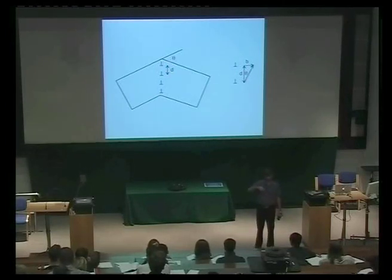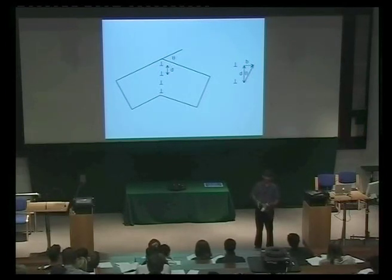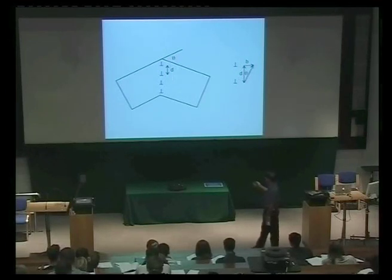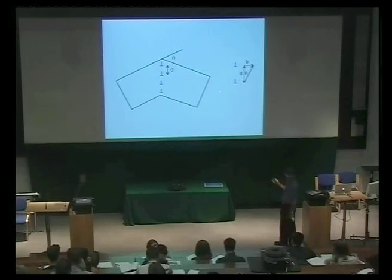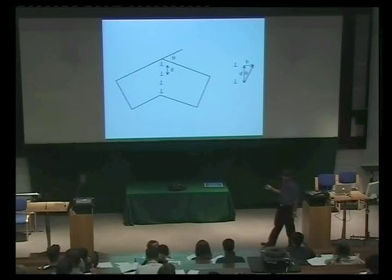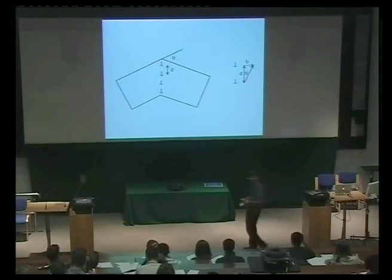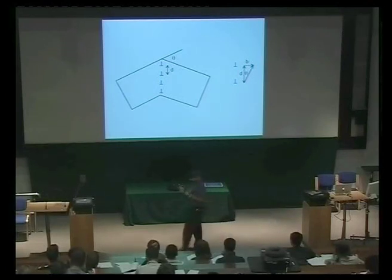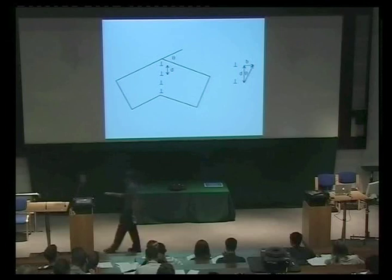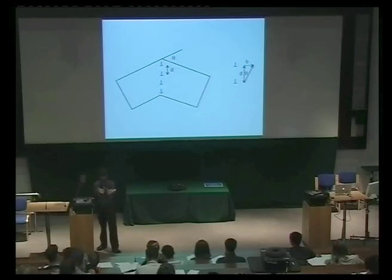The structure of a grain boundary on a fine scale actually consists of an array of dislocations. You put more and more edge dislocations above one another and you increase the angle theta. Here D is the spacing between these dislocations. There's very simple geometry to show the relationship between the Burgers vector of the dislocation, the misorientation theta, and the spacing. The finer the spacing, the greater will be the misorientation across the boundary.